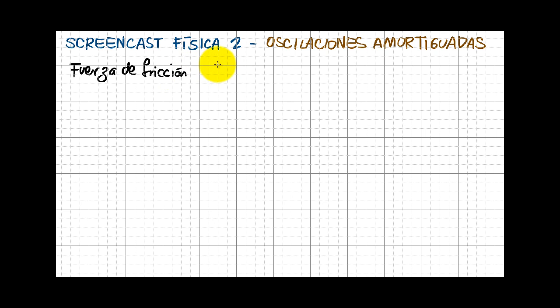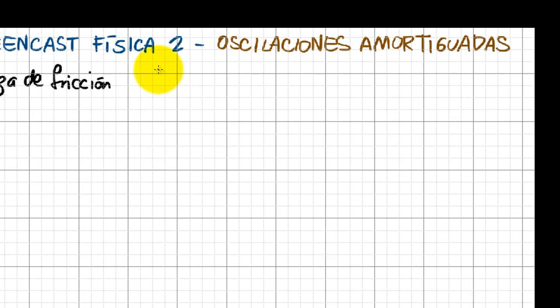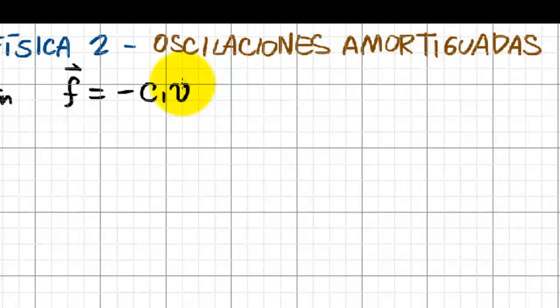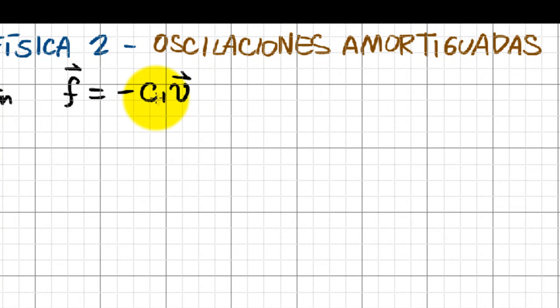This friction force, which I'm going to draw here, is a vector, and its general form is a constant times the velocity. This constant is called the viscous term.